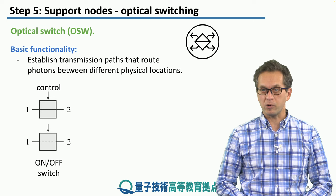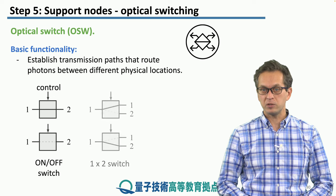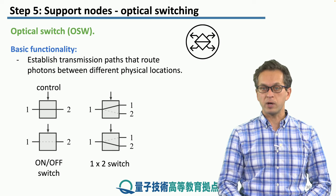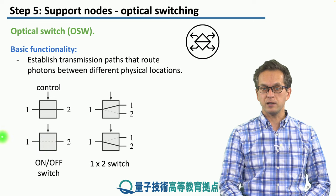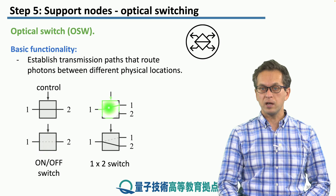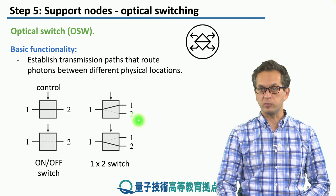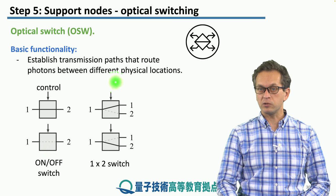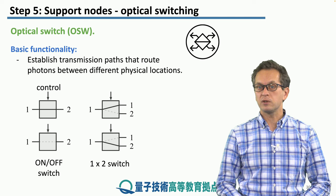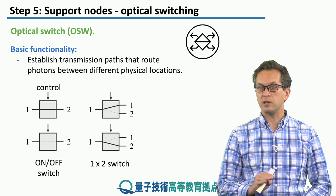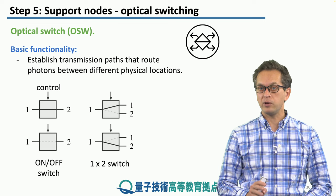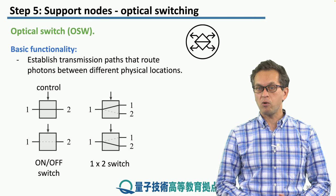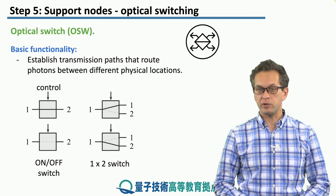A slightly more complicated switch would be one-by-two, where we have a single input port and two output ports. Here the control determines whether the input port is connected to output port number one or output port number two.